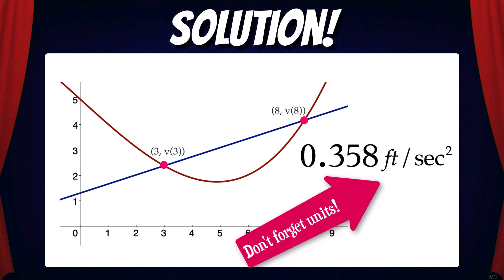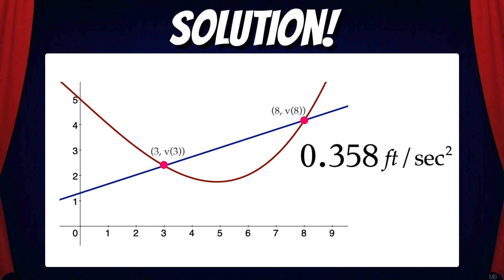But don't forget units. In this problem, we're dealing with a change in velocity over change in time, so the units of the average rate of change are feet per second squared.